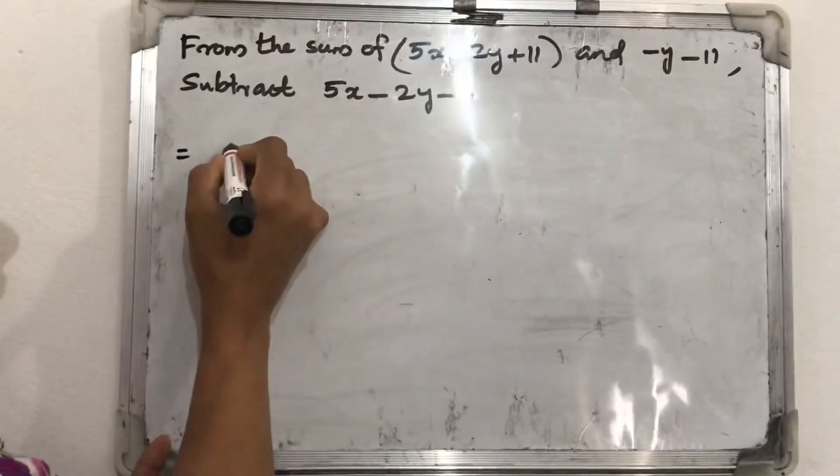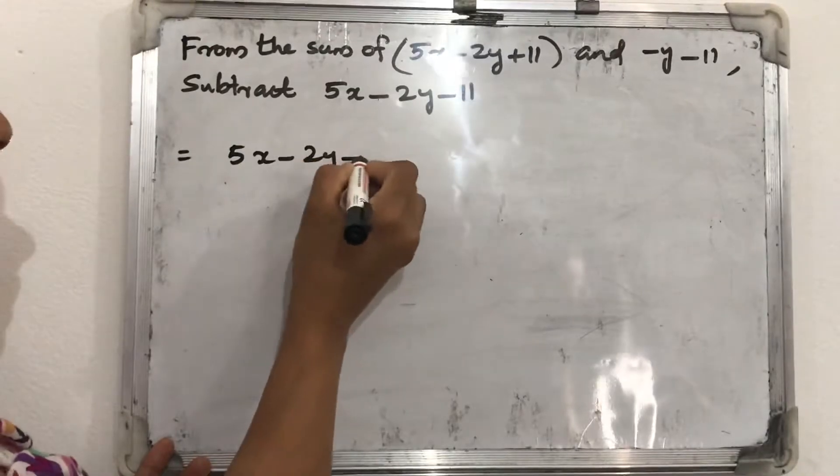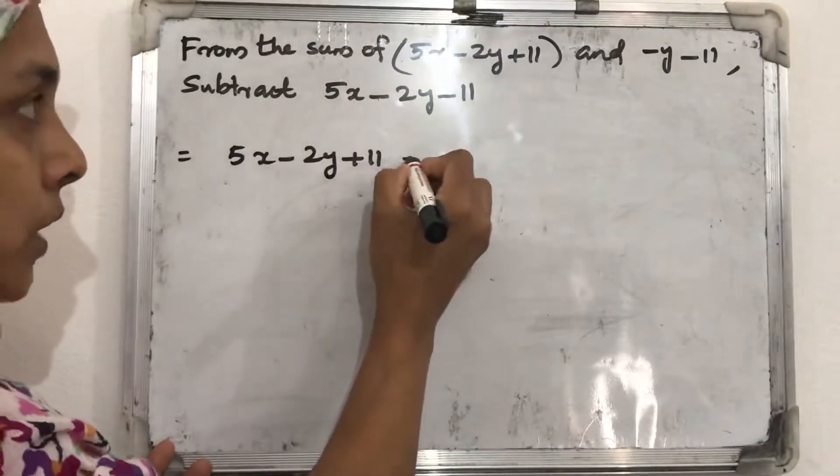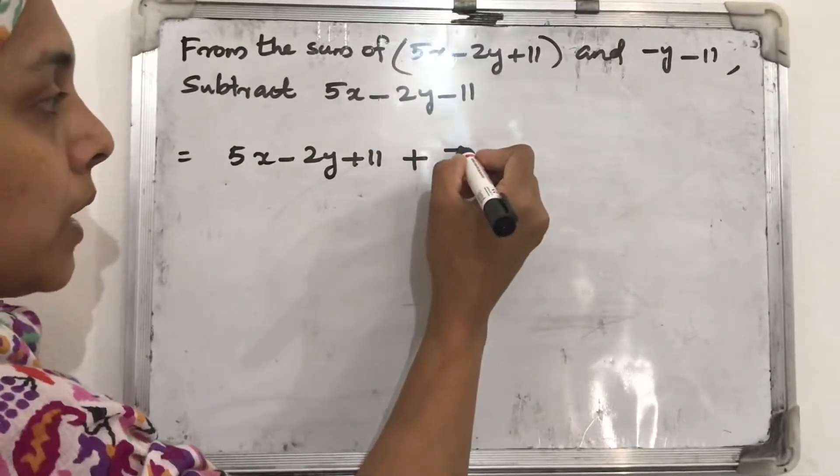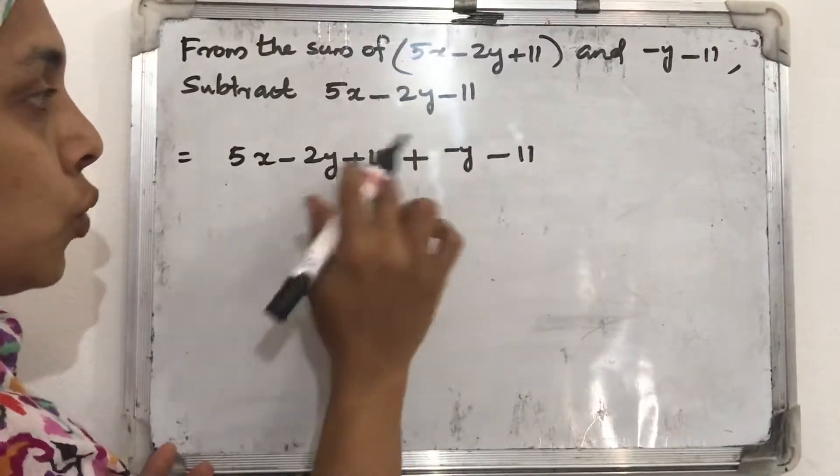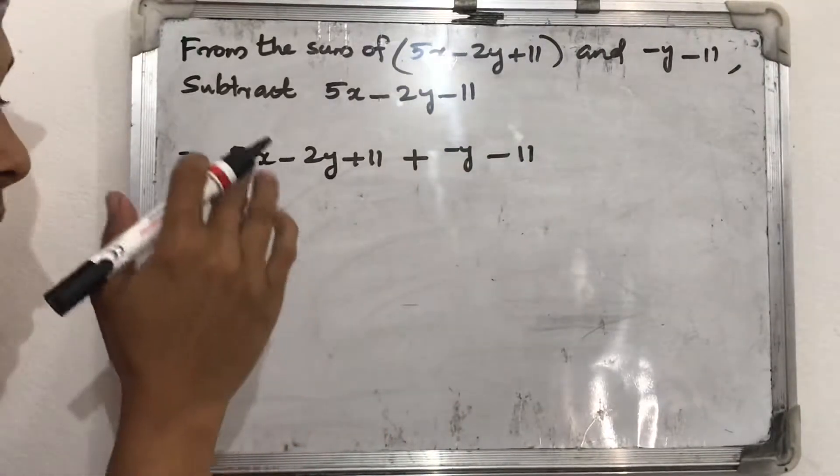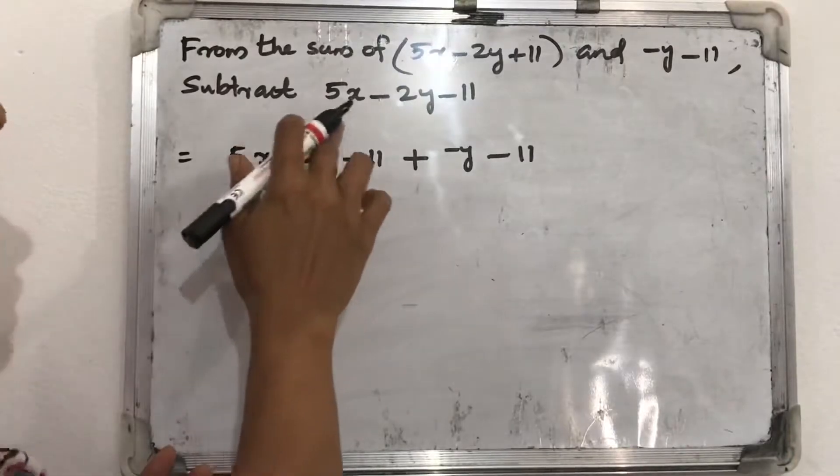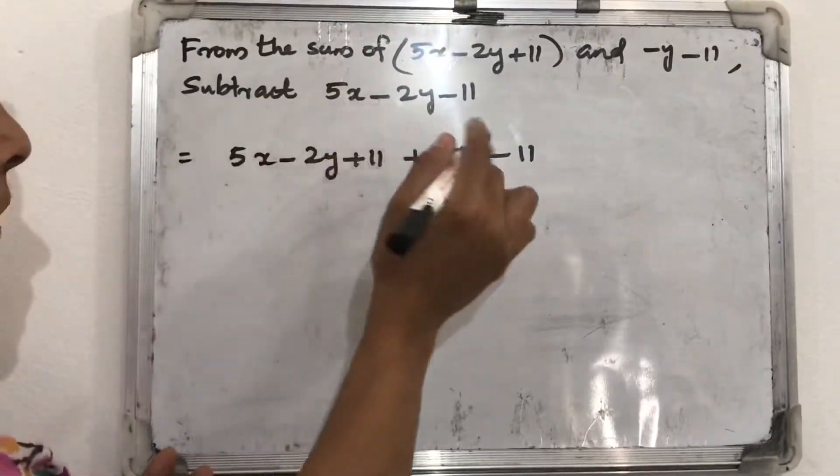First expression, we can find out that 5x minus 2y plus 11. This we want to add with minus y minus 11. These two expressions we want to add first. Then from the sum we want to subtract this. So what will be its sum?